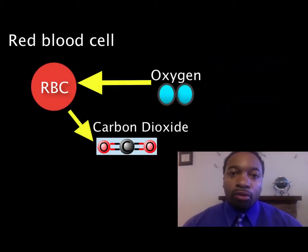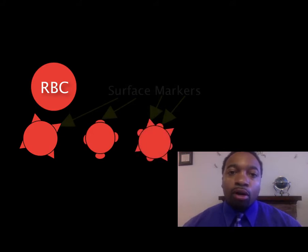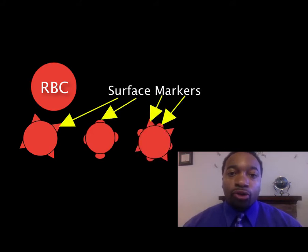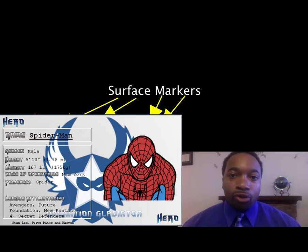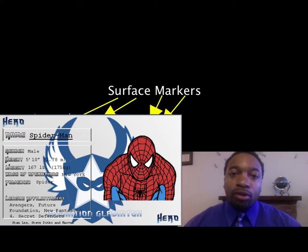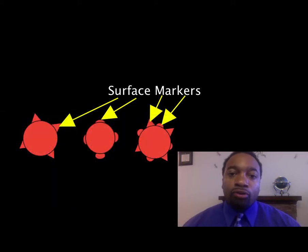Red blood cells are the cells that carry oxygen and carbon dioxide throughout your body. On the surface of red blood cells, on the cell membrane, are our surface markers. You can think of surface markers as sort of like ID cards — when you show an ID card, you are verifying that you belong wherever you're trying to go. So think of surface markers on red blood cells and many other cells as their ID cards to verify that they belong.